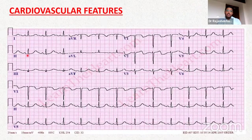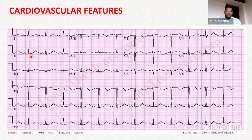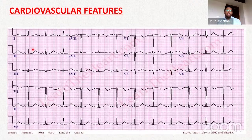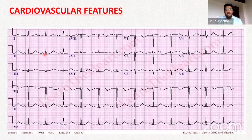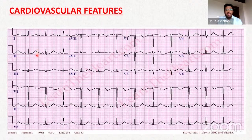On ECG, the QT interval is prolonged. Normal values are up to 450 ms in males and 470 ms in females. A practical rule: if the QT interval exceeds half of the RR interval, QT is definitely prolonged. In the representative ECG shown, the QT interval can be measured as approximately 460–500 ms, clearly exceeding half the RR interval, confirming hypocalcemia. This prolonged QT is due to impaired calcium influx during phase 2 of the cardiac action potential.